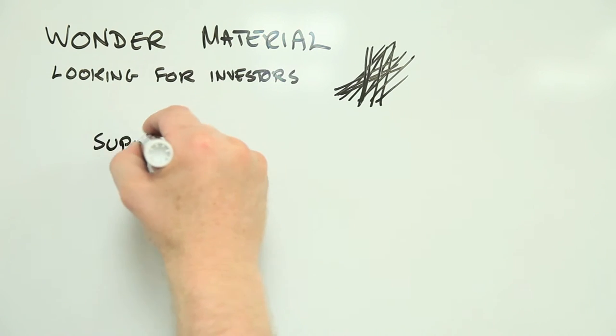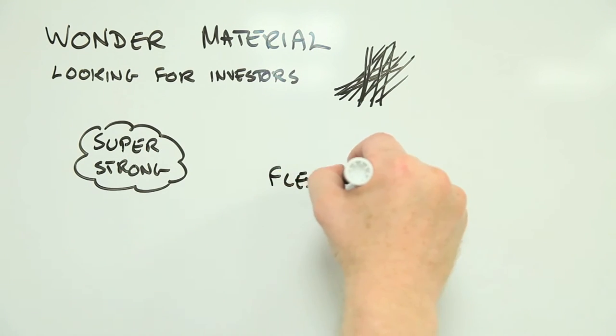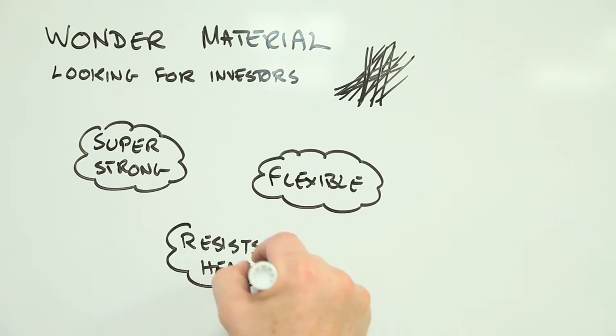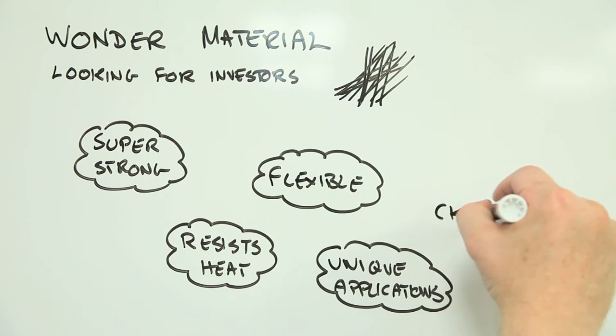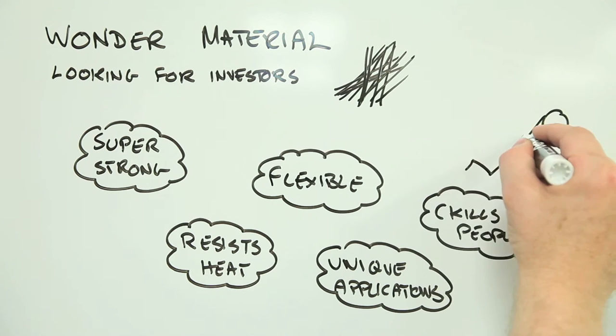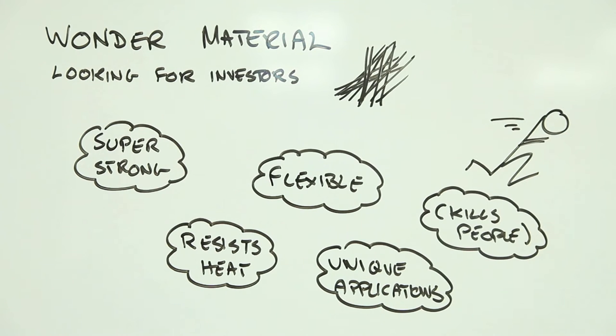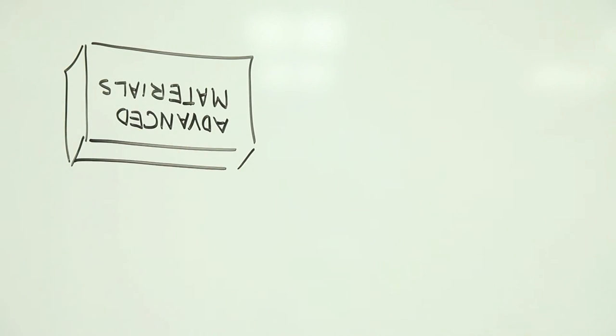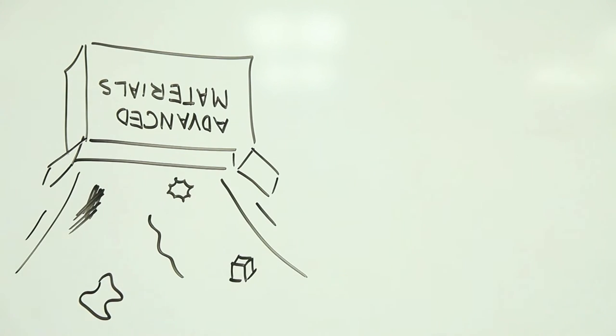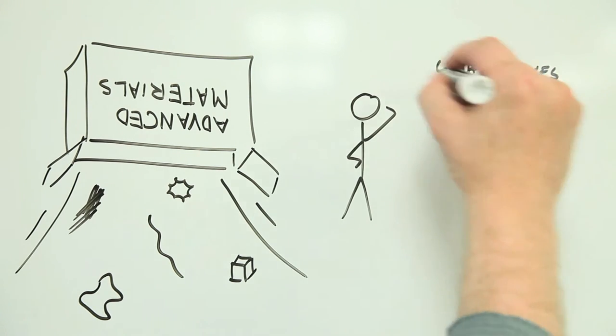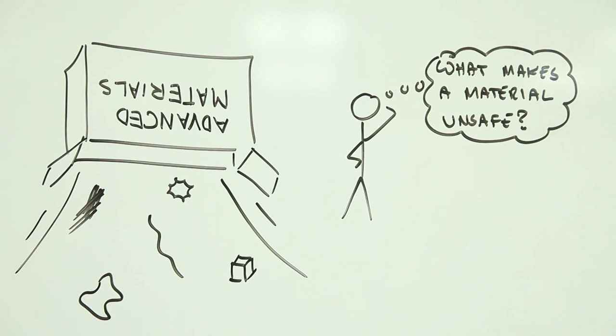If advanced materials are going to be as useful as we think they could be, these are really important questions. The last thing we need is a wonder material that ends up causing disease or harming the environment. It's not good for the people it affects, and it's certainly not good for business. But how do we know what makes an advanced material potentially dangerous, and how future risks can be avoided? To answer that, we need to start with what we know about what makes any material risky, and build up from there.